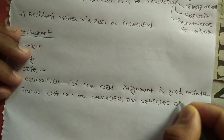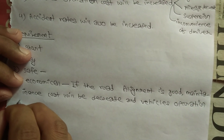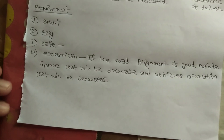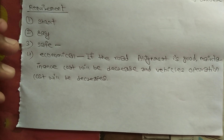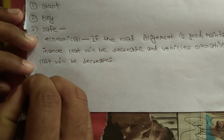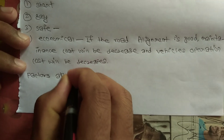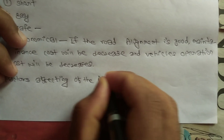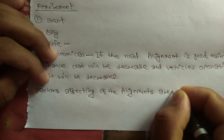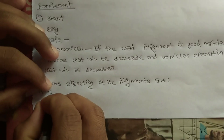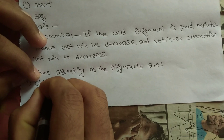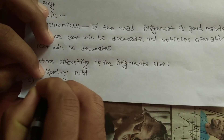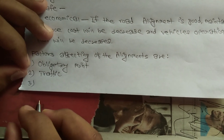So the next point is about what are the factors that control the alignment. The factors affecting the alignment are: first, obligatory point; second, traffic; and third, geometric design.